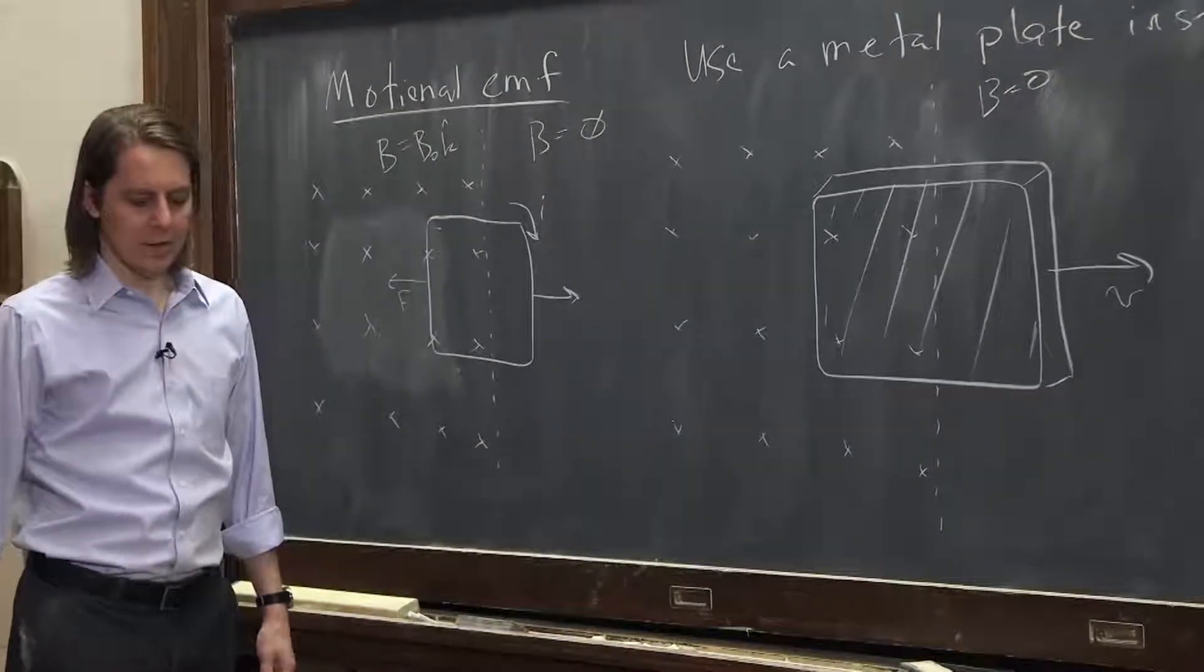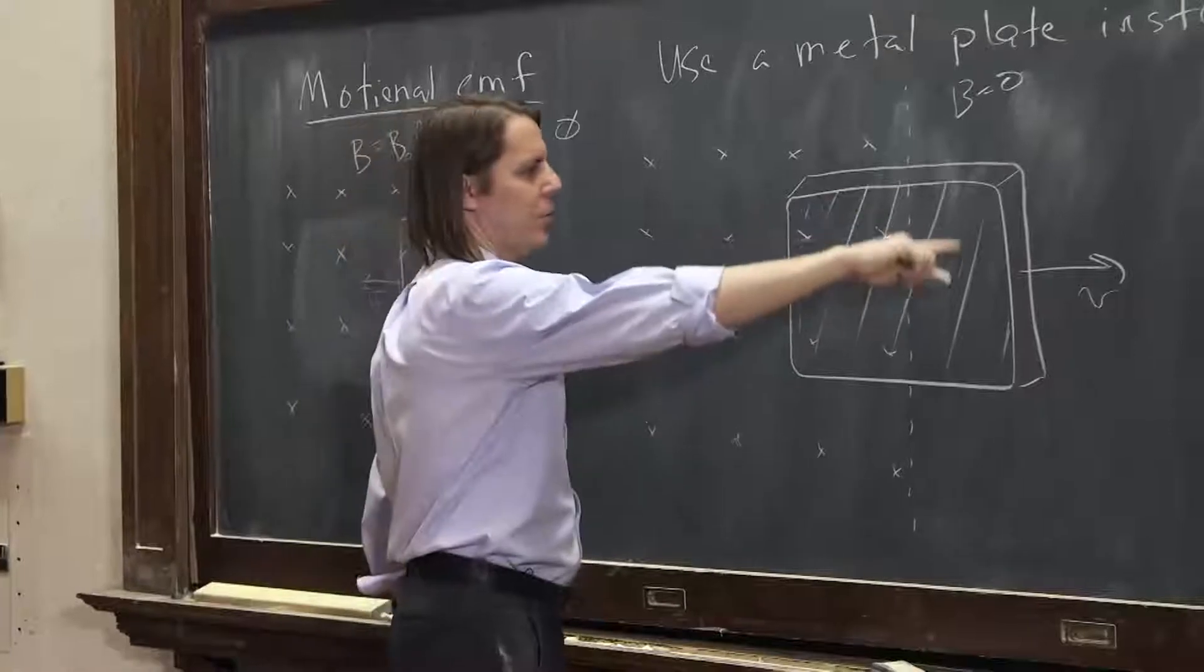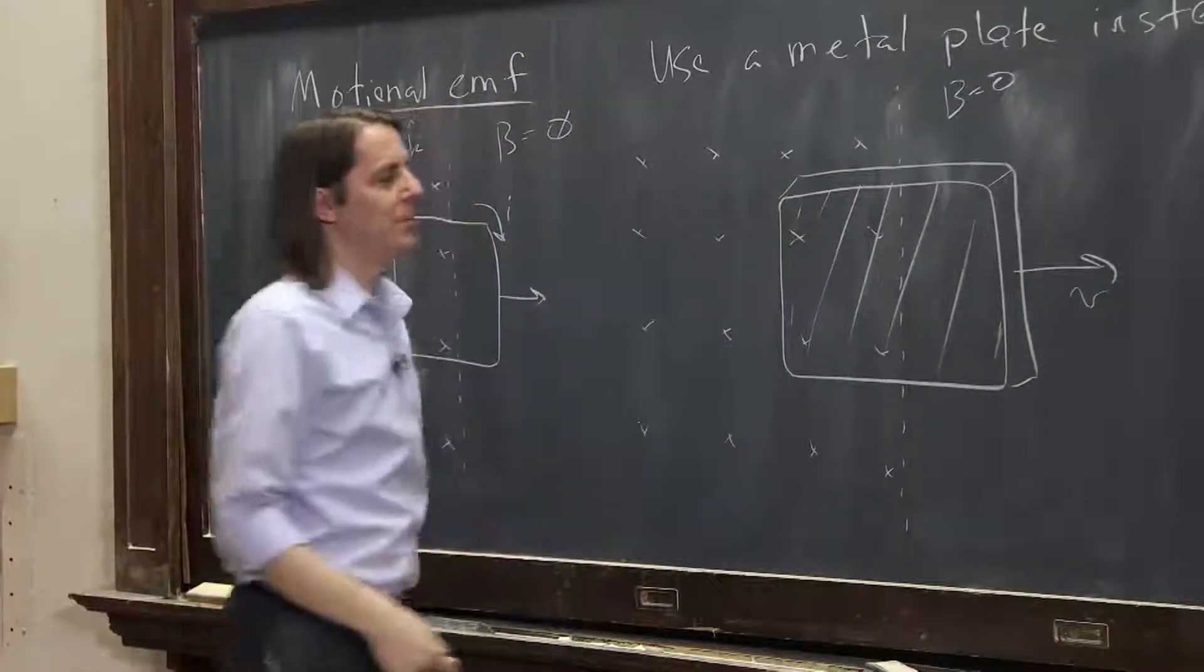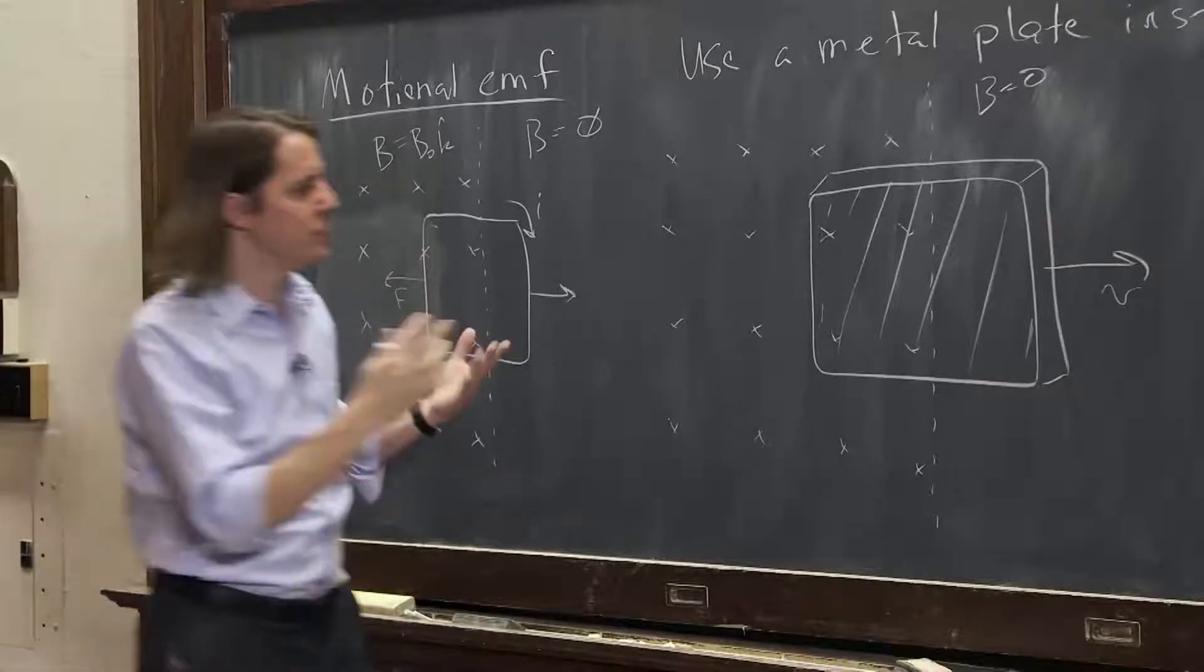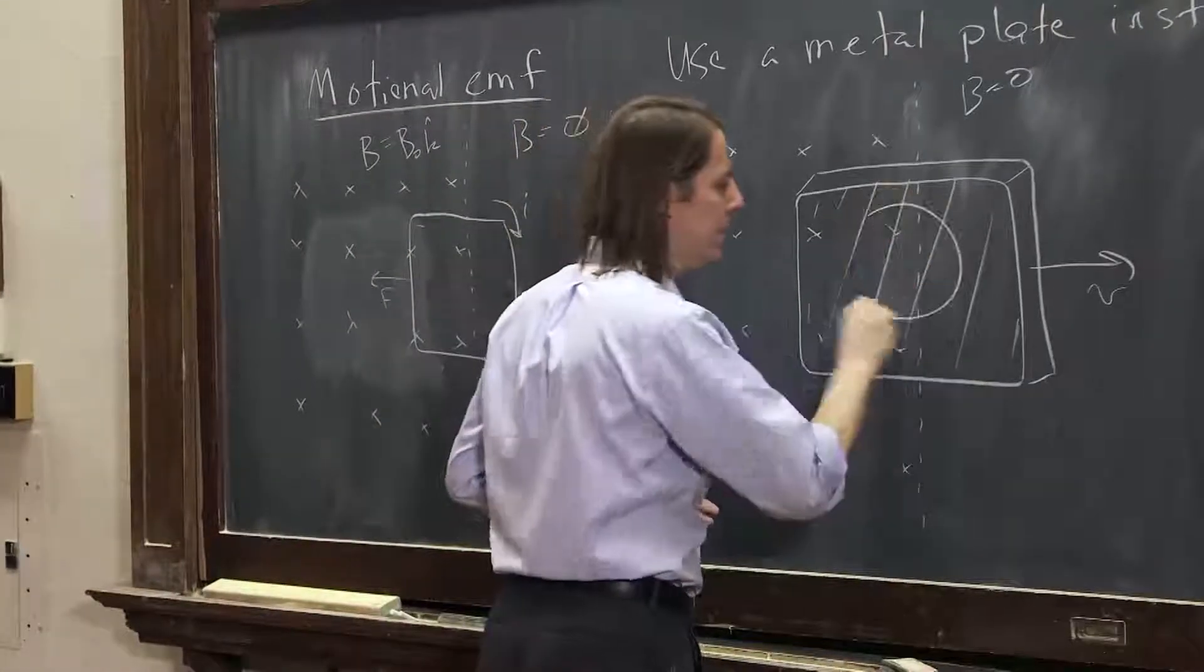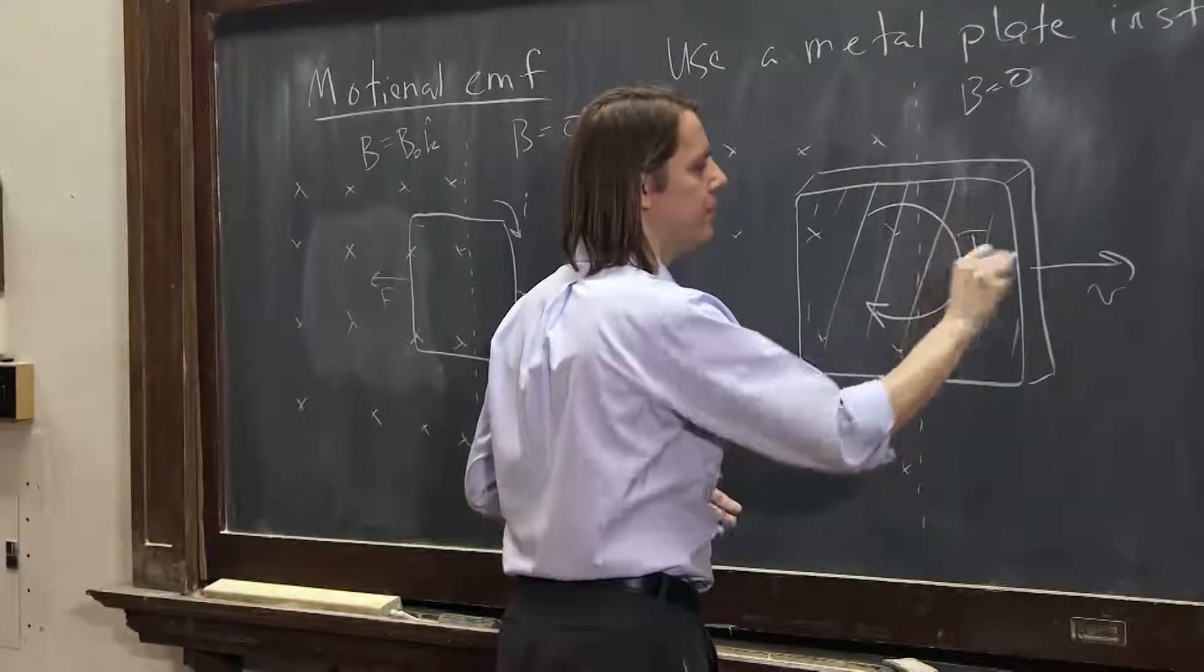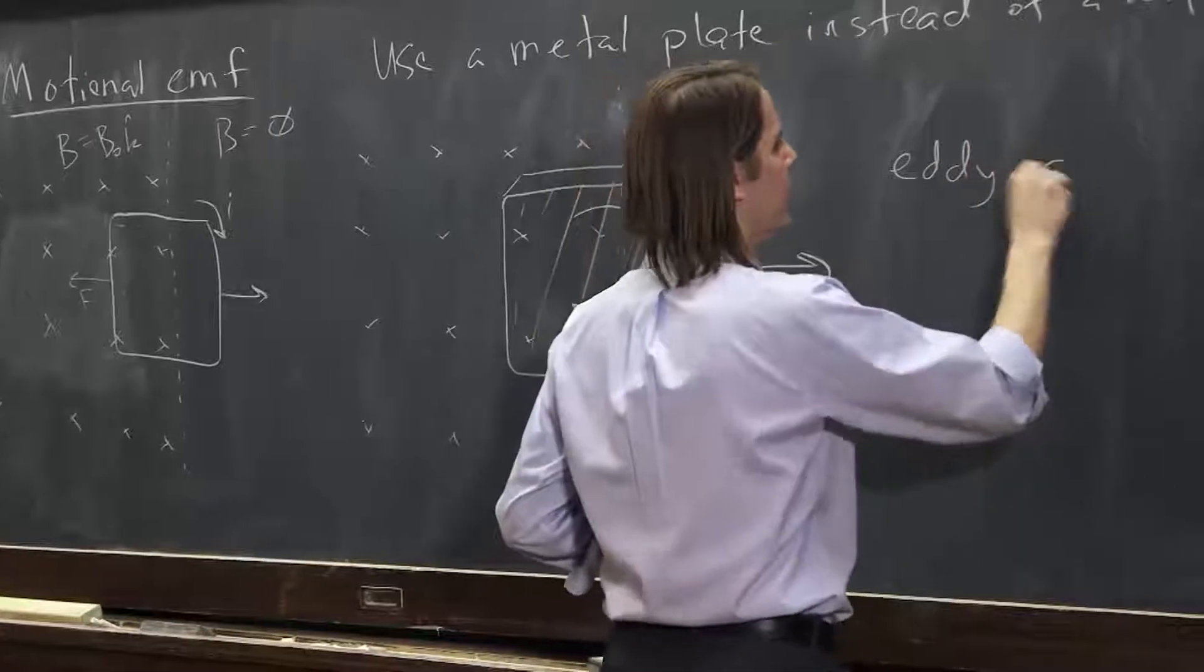Well, basically, the same thing will happen. The current, you can imagine, this big piece of metal, is a bunch of little wires, wire loops all stuck together. There's no reason that you wouldn't still get current flow. It'll flow in the same direction. And that current flow in a solid object is called an eddy current.